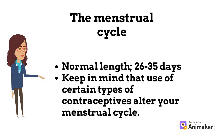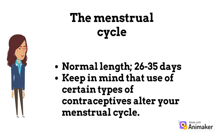So keep track of your period every month for about 5 months to know your period length. Keep in mind that use of certain types of contraceptives can alter your menstrual cycle.